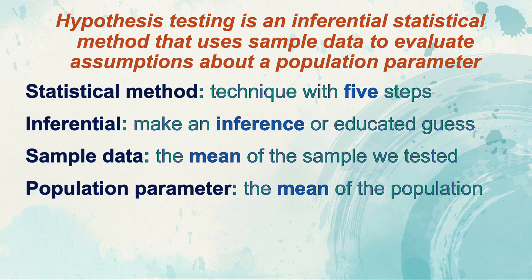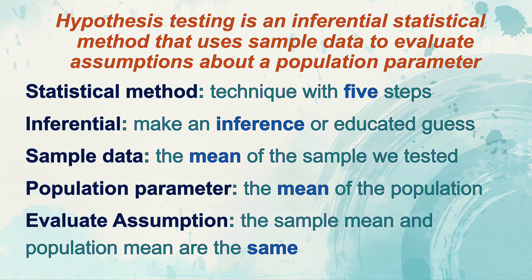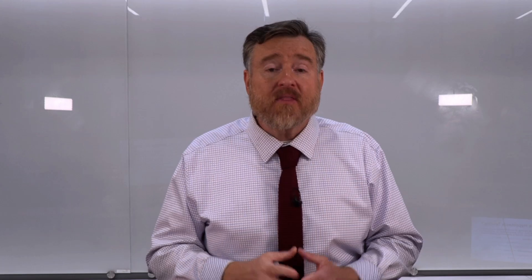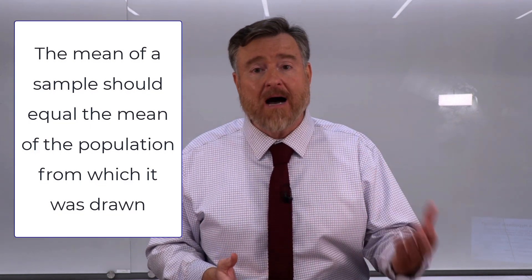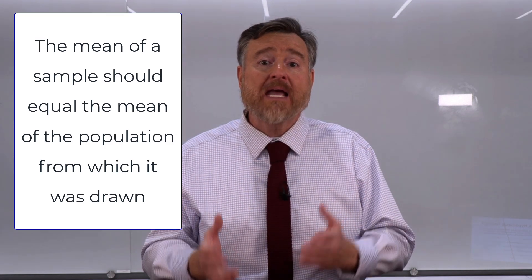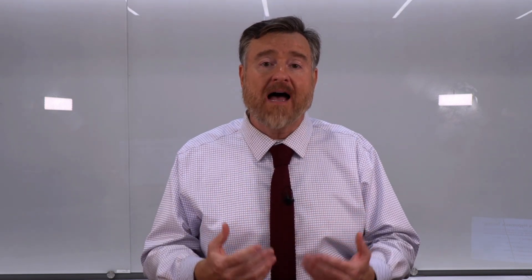Specifically, the statistic that we are interested in is the mean — the descriptive statistic for a sample. We want to evaluate whether our sample mean well represents a population parameter. Does the mean of the sample match the mean of the population from which this sample was drawn? At least, that's our assumption. We begin with an assumption that a sample mean should be the same as the population from which that sample was drawn — the sample mean and the population should be the same, no different. That's our assumption. We're going to evaluate that assumption using a technique with five steps to make an educated guess as to whether our sample mean truly represents our population mean.